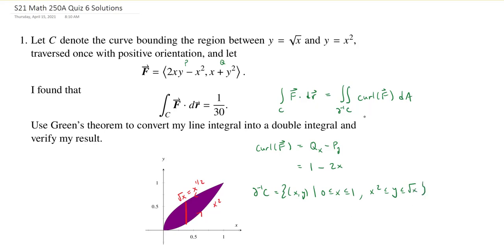This allows us now to convert our double integral into an iterated integral. We're going to integrate X from 0 to 1 and then Y from X squared to the square root of X. Now we can replace curl of F with 1 minus 2X, and we'll have dy dx. When we integrate with respect to Y, we're going to get Y minus 2XY, and we'll evaluate that between X squared and the square root of X.